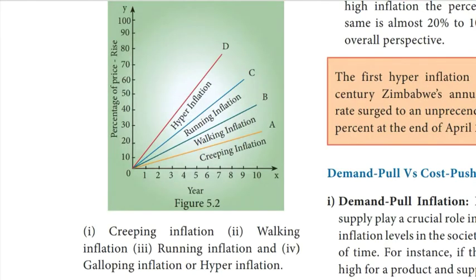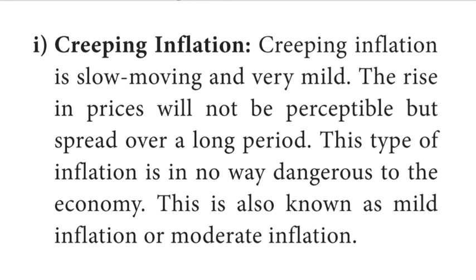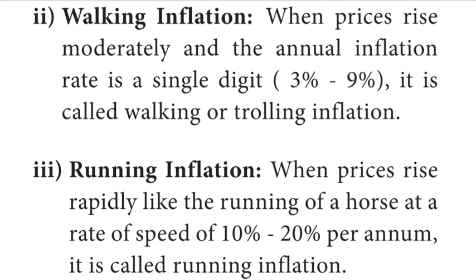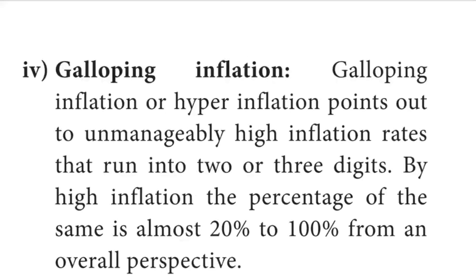Question number 5: Write the types of inflation. There are four types: first, creeping inflation — slow moving and very mild, the rise in prices is not perceptible but spreads over a long period; second, walking inflation — when prices rise moderately and the annual inflation rate is a single digit; third, running inflation — when prices rise rapidly like a running horse, at a rate of 10% to 20% per annum; fourth, galloping inflation or hyperinflation — unmanageably high inflation rates running into two or three digits.